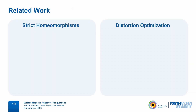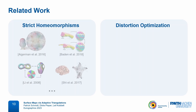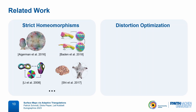However, a majority of existing works fulfill either one or the other of these two goals. There are methods that compute strict homeomorphisms, but they usually don't directly optimize end-to-end mapping distortion. For example, they might optimize distortion into some intermediate domain, or they might compute conformal maps which have no angle distortion, but can have very high-scale distortion.